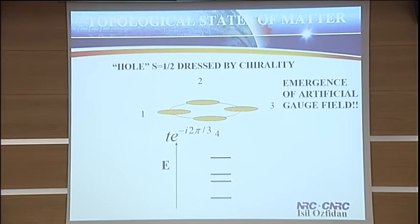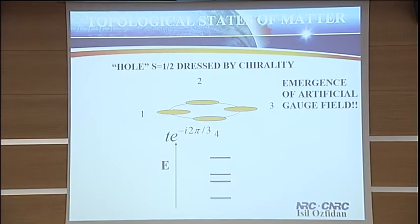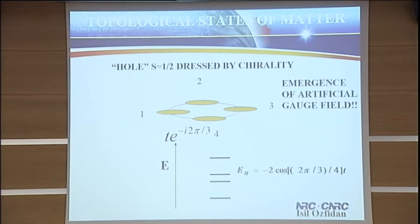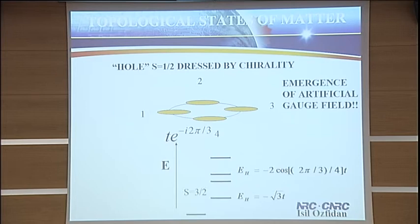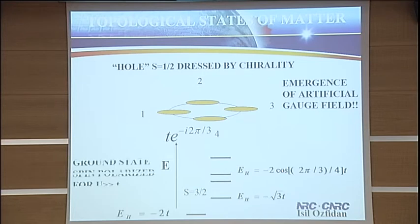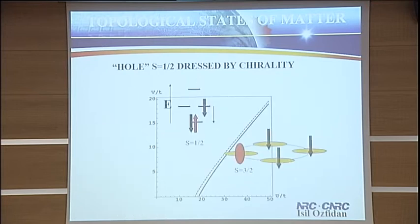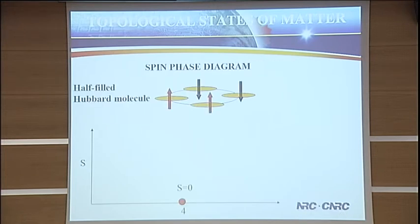Now we can calculate the energy spectrum. The ground state is proportional to the tunneling matrix element but also has the acquired phase. The energy of the spin-1/2 complex is minus square root of 3 times t, whereas the ground state of the spin-polarized complex was minus 2t. So the gauge field reduced the tunneling and stabilized the spin-polarized complex — the ground state is spin polarized. For large interaction you have a spin-polarized complex; for weak interactions, kinetic energy dominates and you have a spin-depolarized complex. So we can engineer spin.